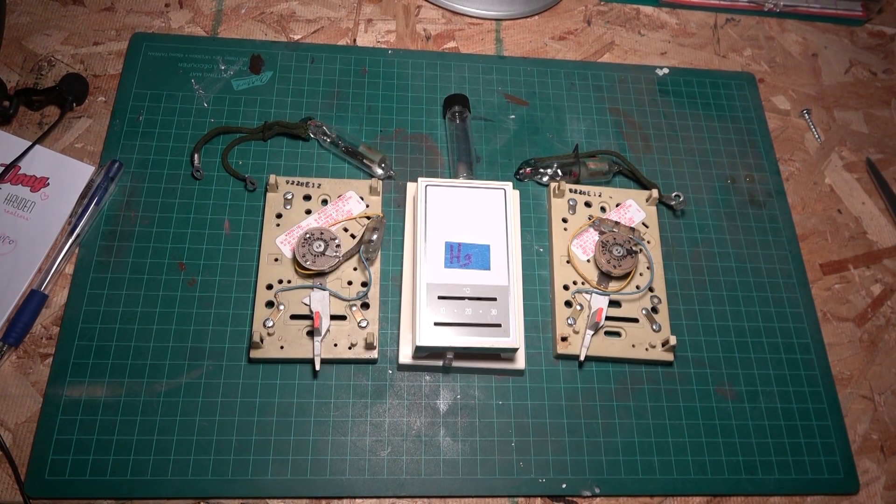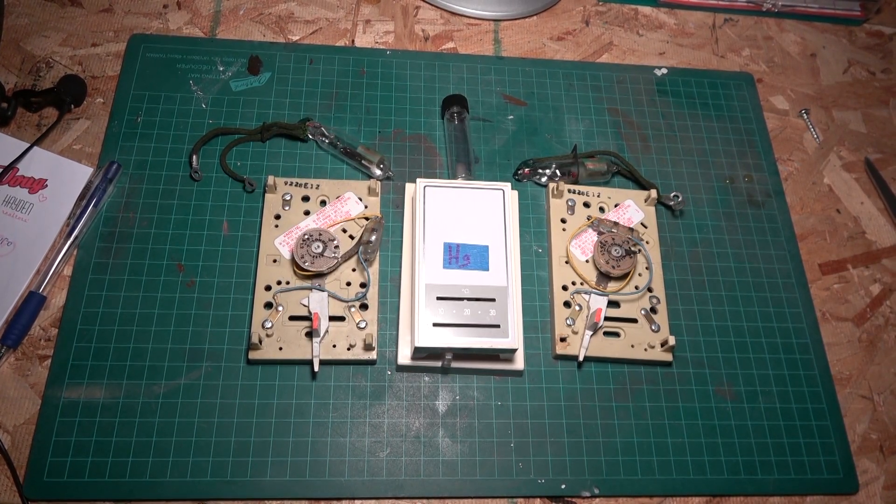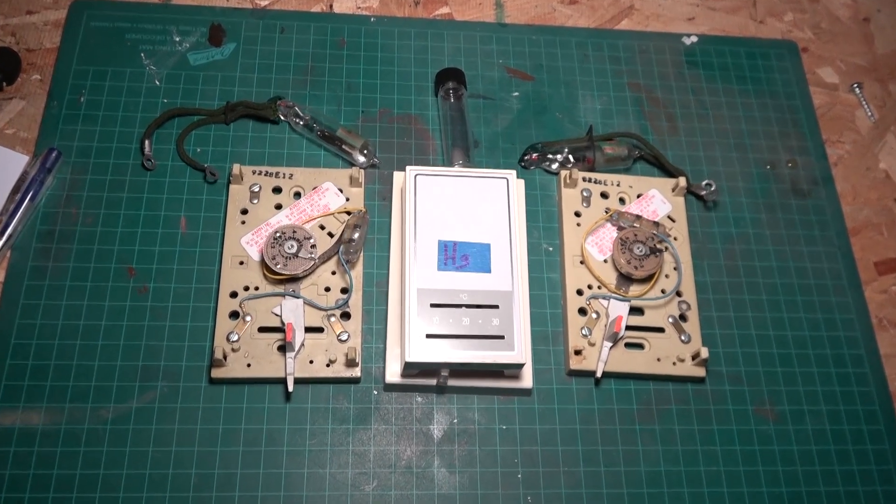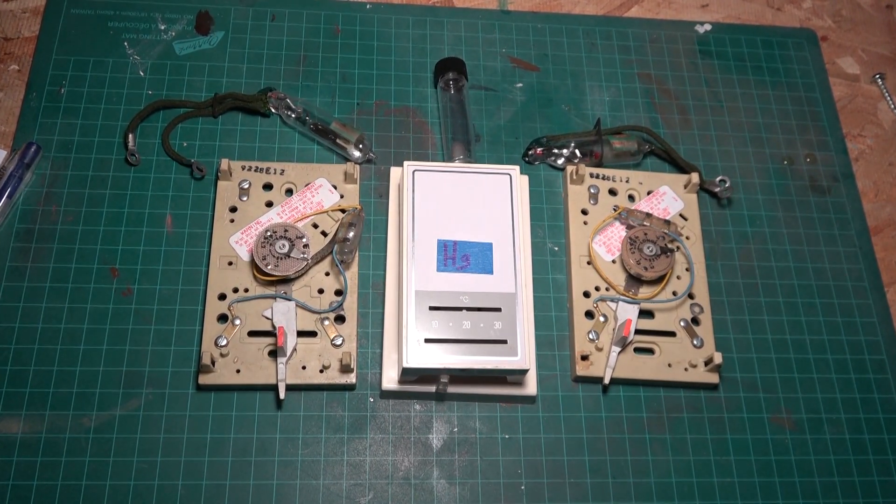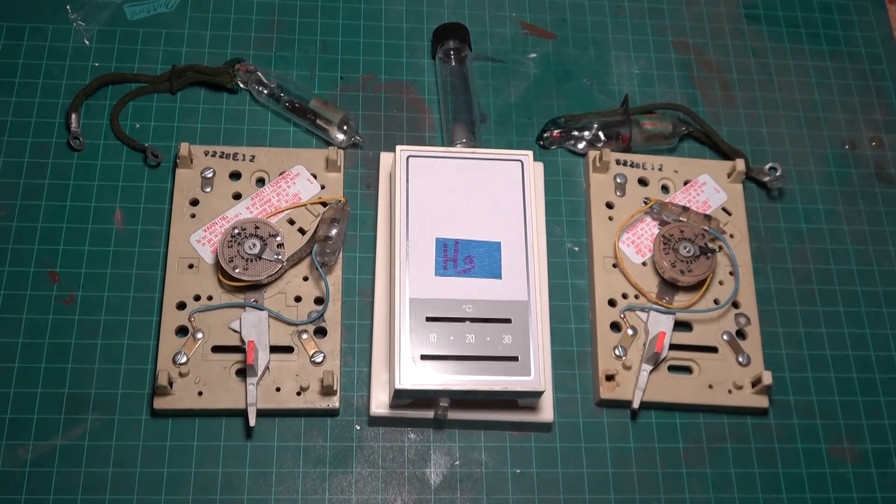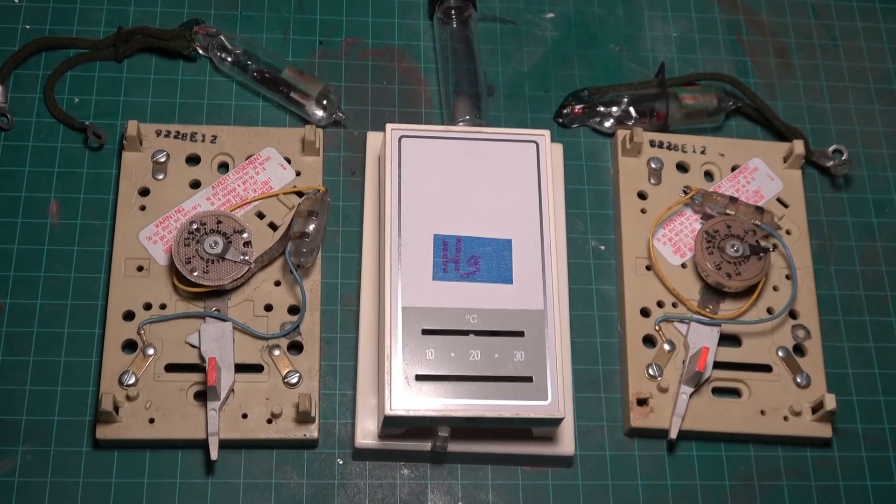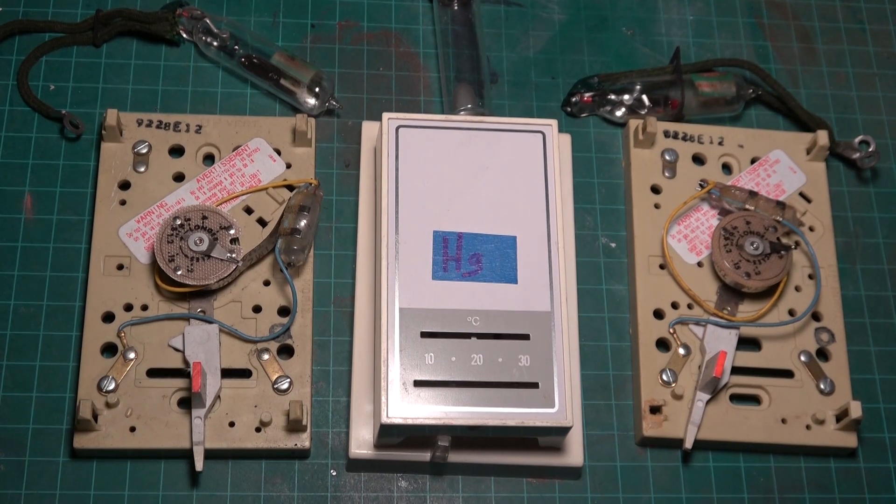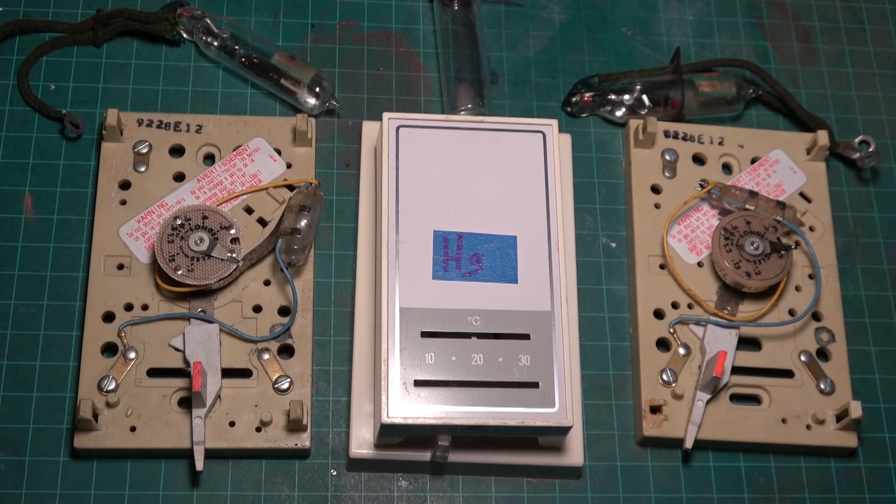In today's video I'll be looking at old mercury thermostats. These thermostats you probably saw on your parents' or grandparents' house. I would say they'd be around 1980s and earlier. They worked on a very simple premise that a mercury switch would turn on and off your furnace based on the temperature.